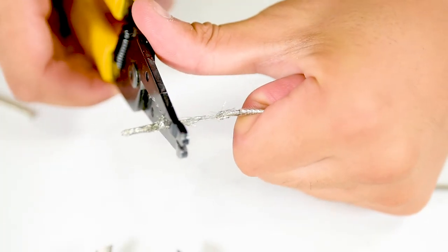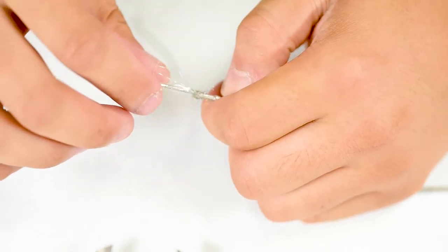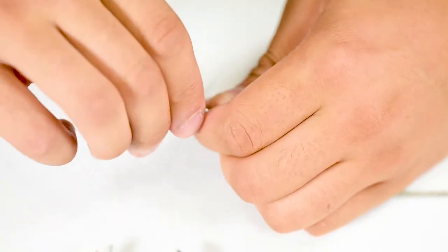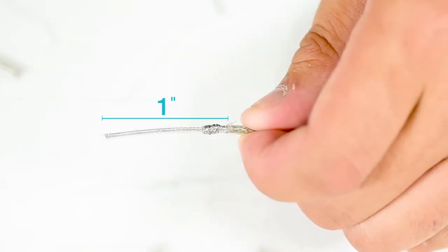Use the 18 gauge hole of the wire stripper to remove 1 inch of the braided wire, making sure not to nick the inner wire insulation.